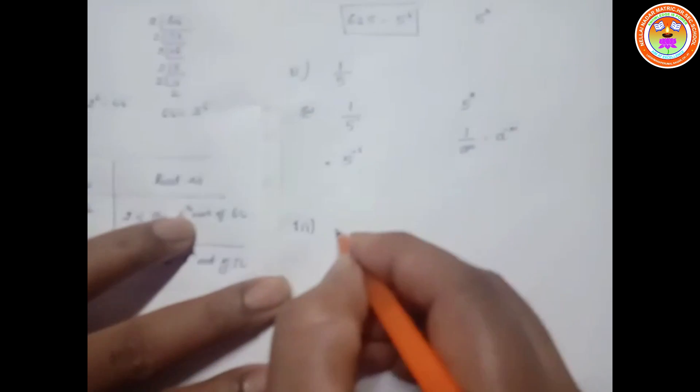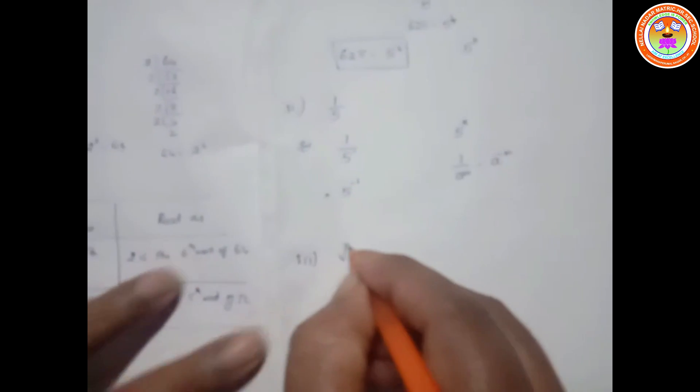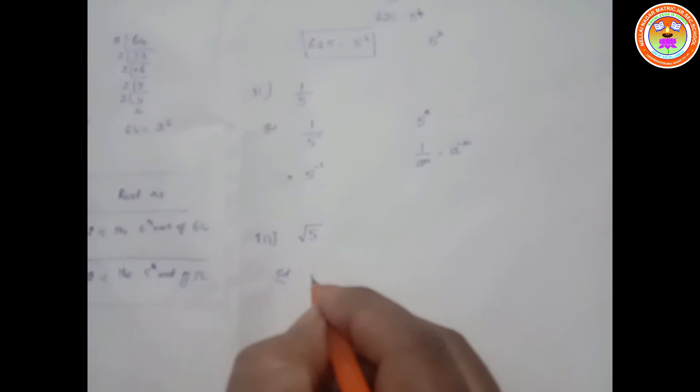Third subdivision is root 5. Solution: root 5 can be written as 5 to the power of 1 by 2. So it is in the form of 5 to the power of n, giving 5 to the power of 1 by 2.